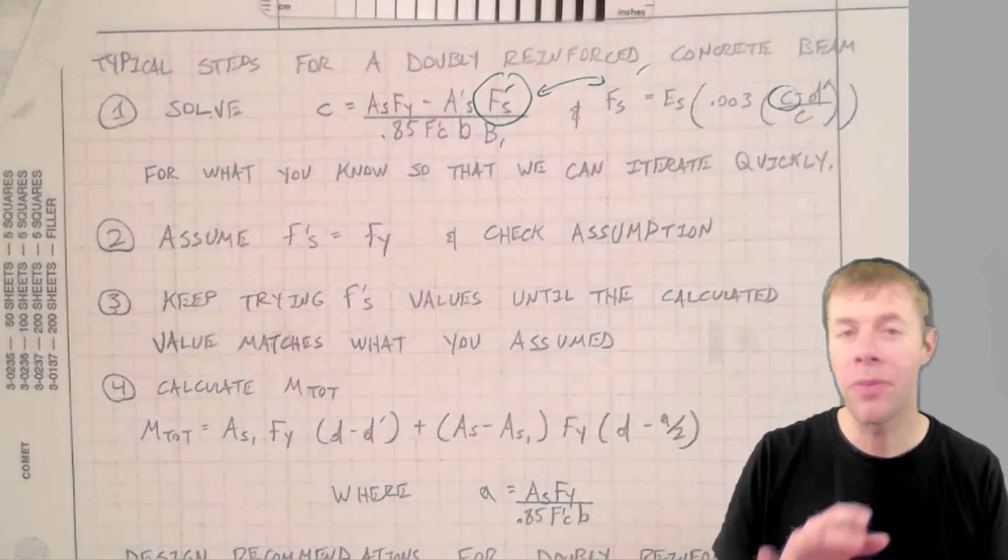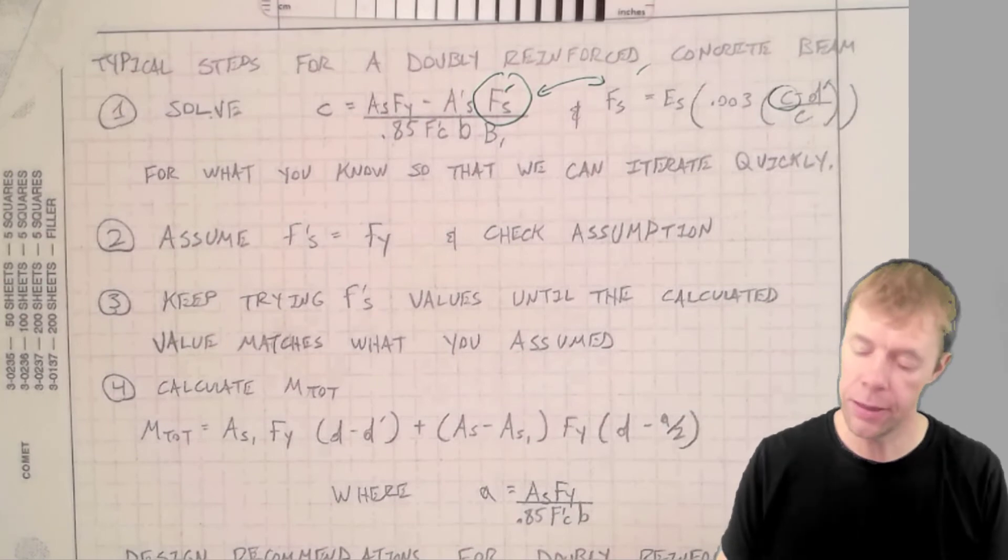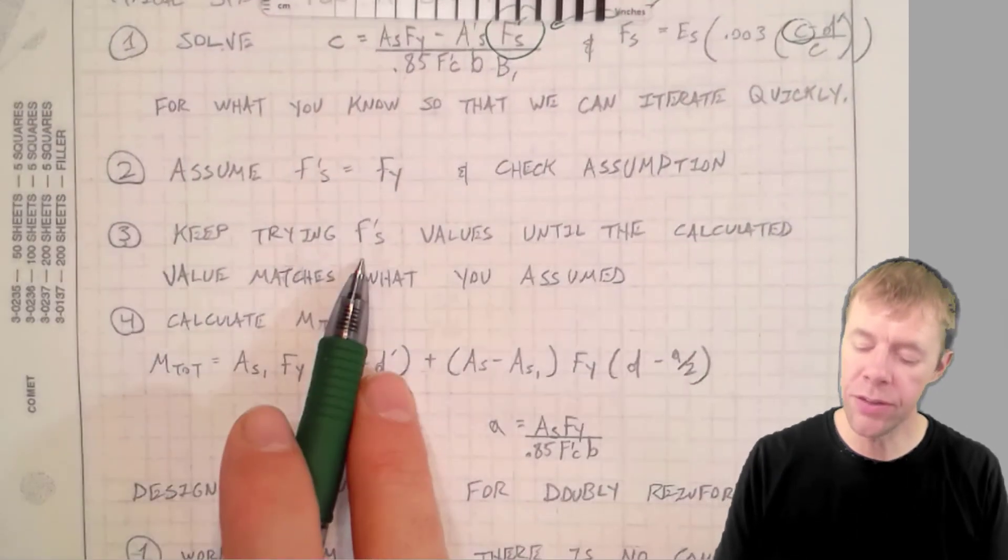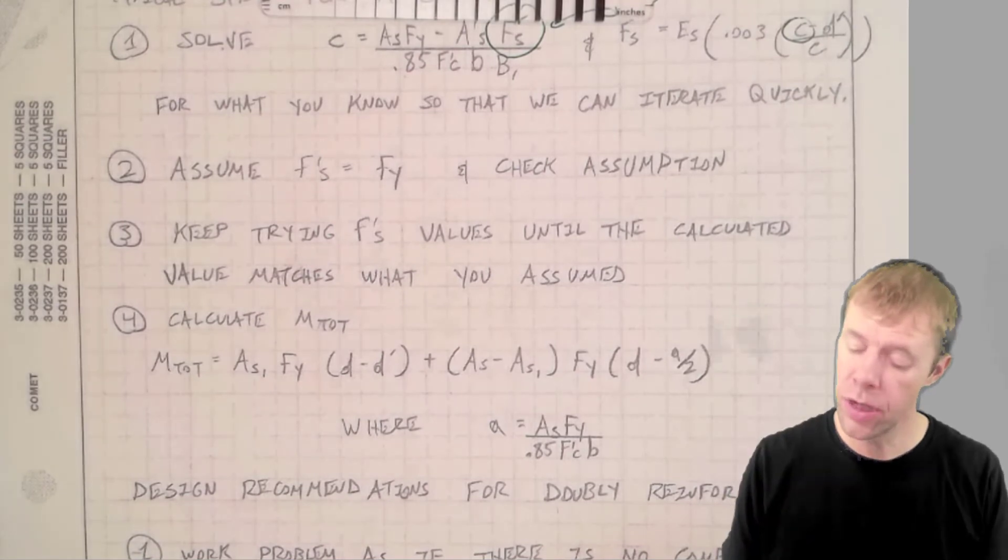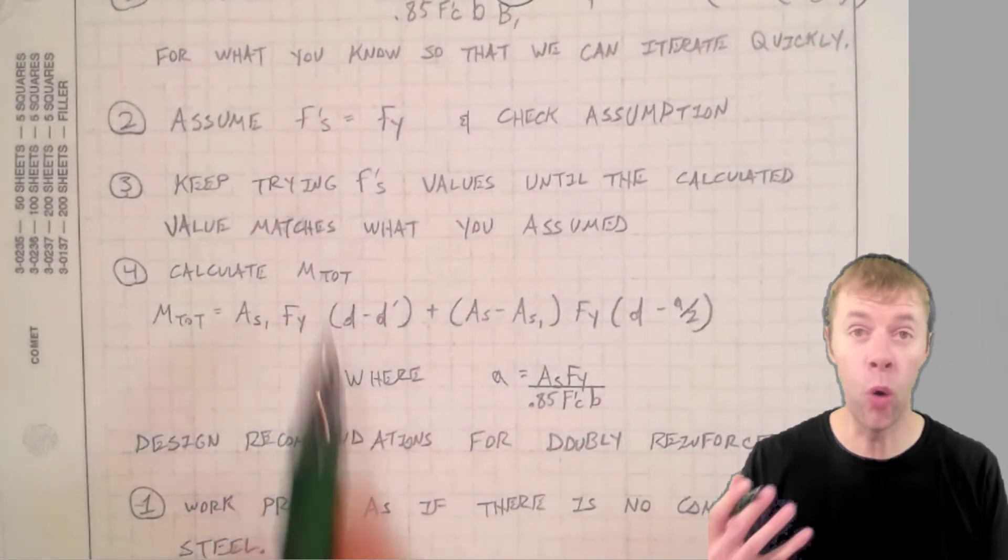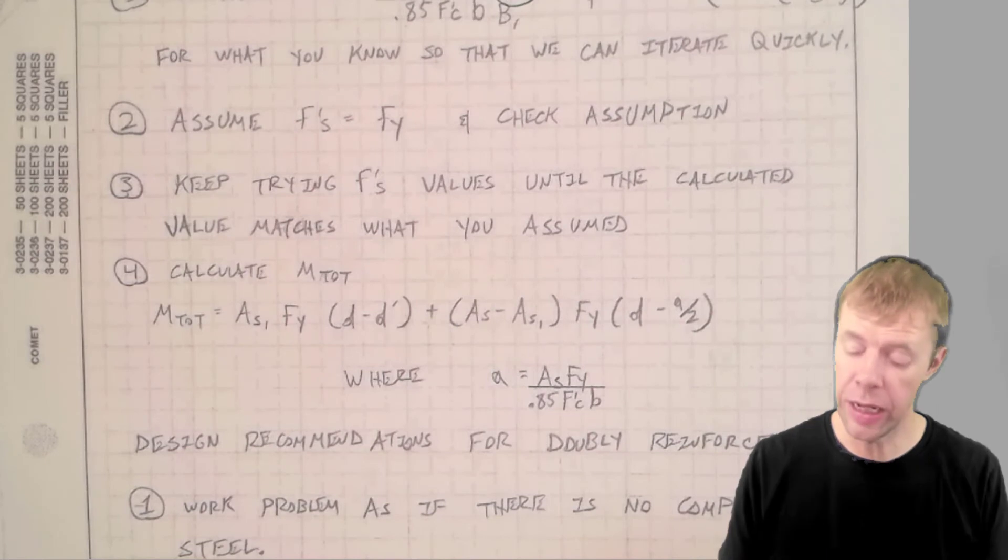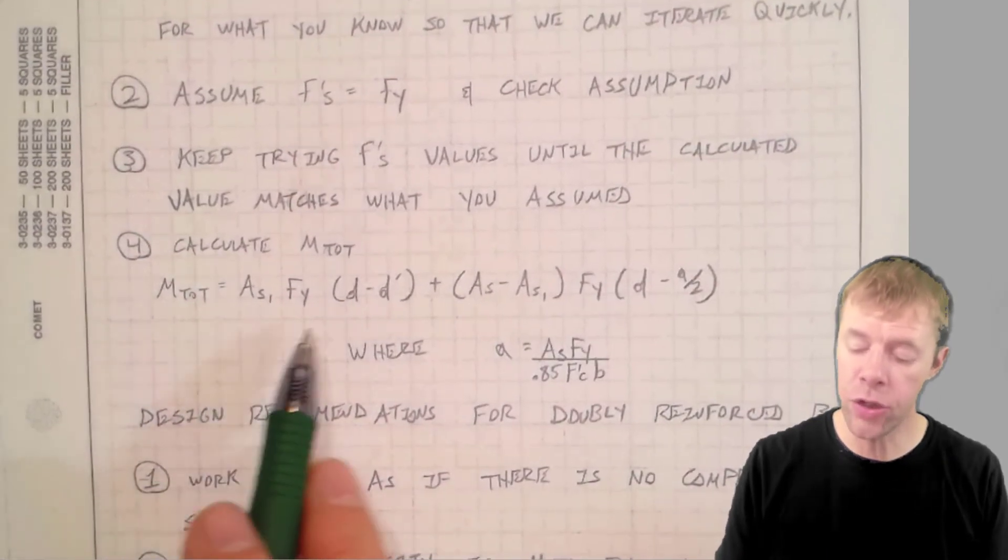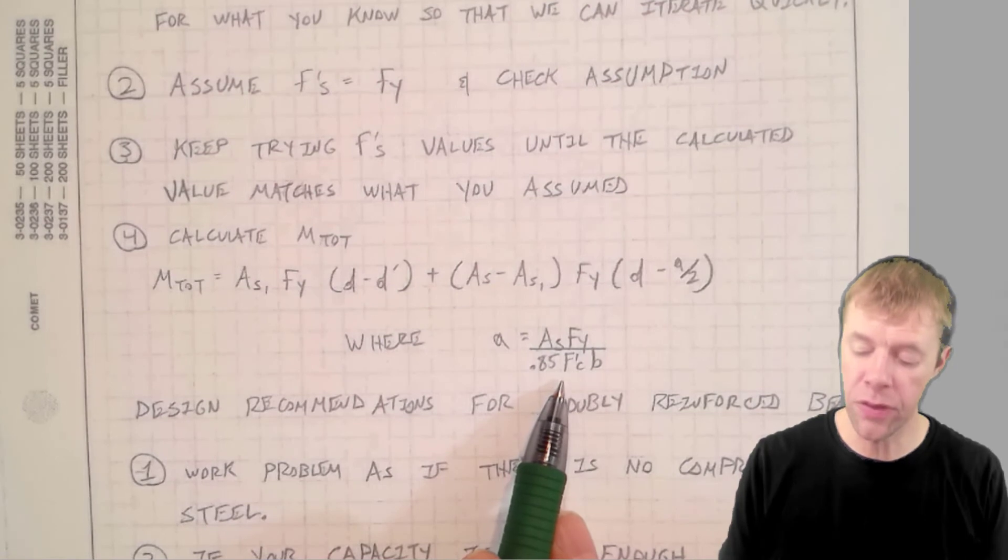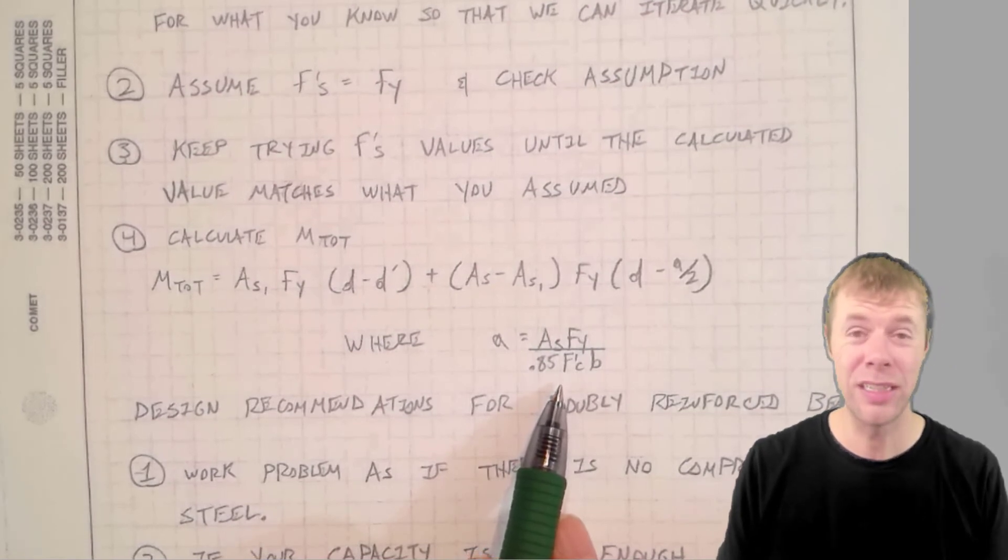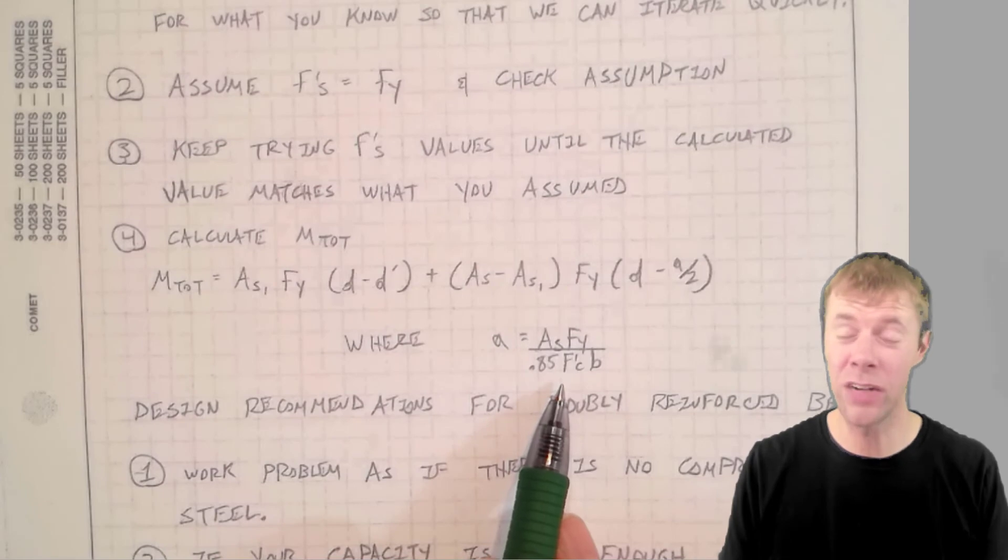How close do they have to be? About a half a KSI. Keep trying these until you get them to match. Make sure you guess smart. Once you figure that out, you're home free. You can calculate your AS1. You can plug into this equation. A happens to be equal to this, and that's it. And don't count on getting a lot of extra strength from your double reinforced concrete members.